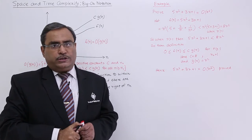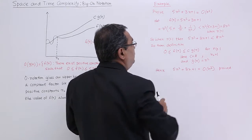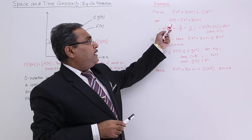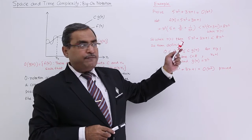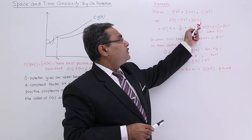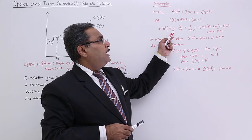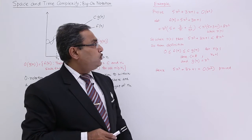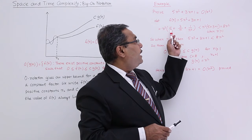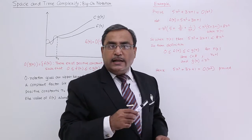Now after defining Big O notation, let us solve one problem. Prove that 5n² + 3n + 1 = O(n²). Let f(n) = 5n² + 3n + 1. Taking n² common gives n²·(5 + 3/n + 1/n²), which is less than n²·(5 + 3 + 1) = 8n² when n is greater than 1.